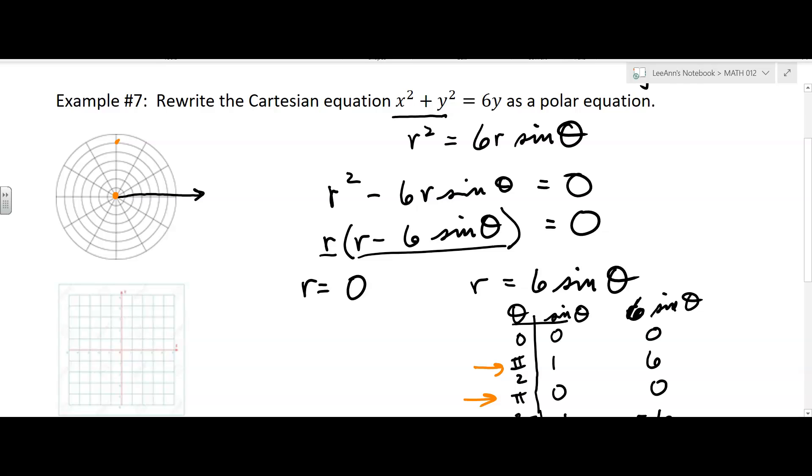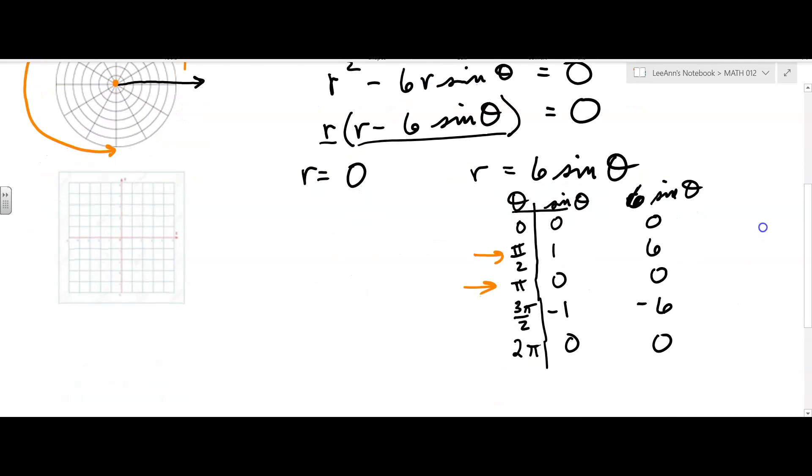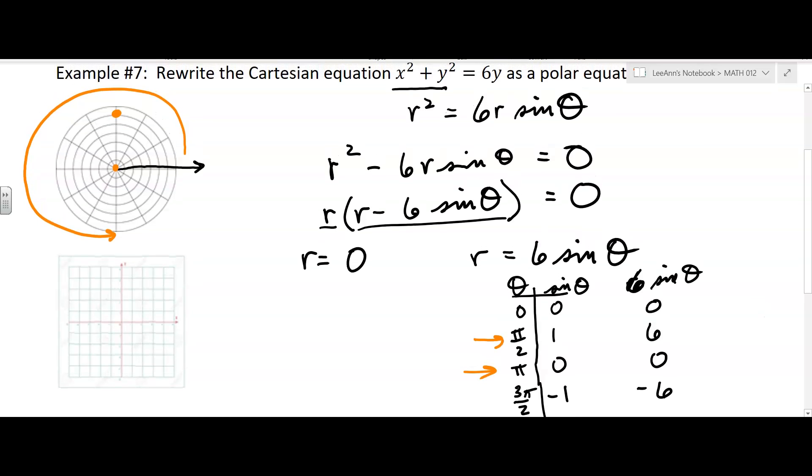So 3 pi over 2, negative 6. So that's going to be—I didn't go in the negative direction—3 pi over 2 would be like rotating all the way over to here, but then you have to go in the negative direction, so you're back to that point there. And then we have 2 pi, so go all the way around but don't go any place, so it's going to be right there.